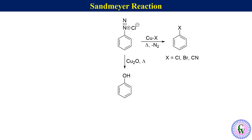The aryl diazonium chloride can easily be prepared from the reaction of aniline with sodium nitrite and HCl at 0 to 5 degrees centigrade. Here I have taken the simplest aryl amine, that is aniline. You can take any unsubstituted or substituted aromatic or heteroaromatic amine.